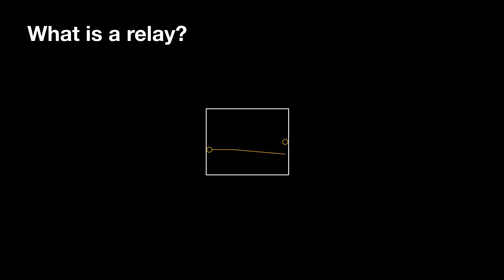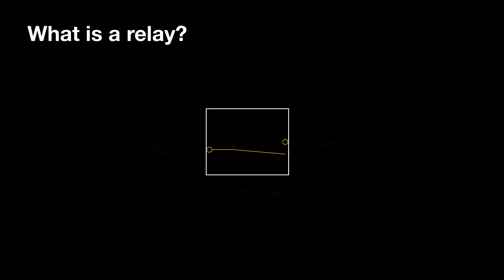Let's get on with it. Since relays are the core part of this build, I felt that I should describe what a relay was and what some of the different types were. The first part of the relay is the armature. The armature is able to move back and forth to touch the contacts of the relay. At the other end of the armature is something called a pole, which is always connected to the armature. Alongside the armature, there's a coil.